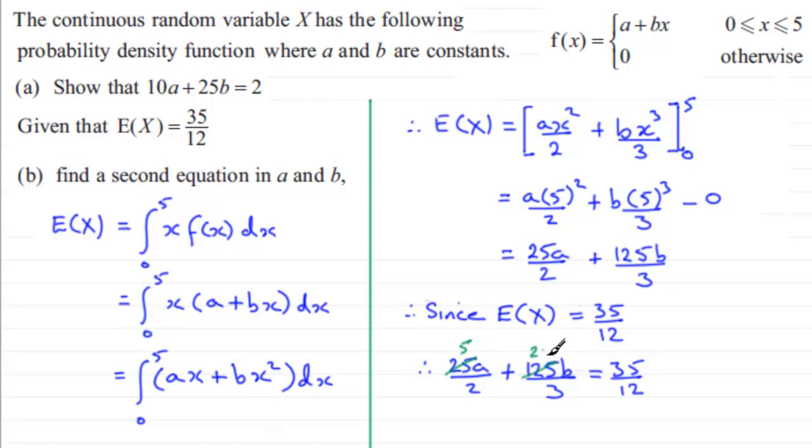25 divided by 5 is 5, 125 divided by 5 is 25, and 35 divided by 5 is 7. Now what I can do now is multiply through by 12, because 2, 3, and 12 all go into 12. And if I do that, if I imagine multiplying this term here by 12, 12 divided by 2 is 6, 6 times 5a is 30, so we end up with 30a.